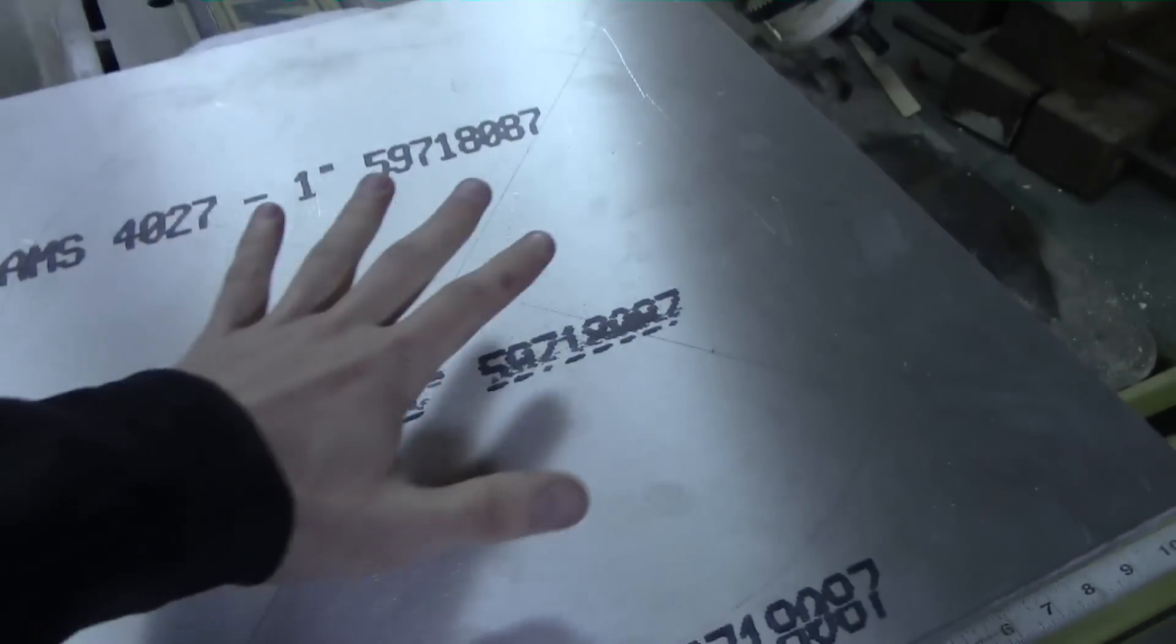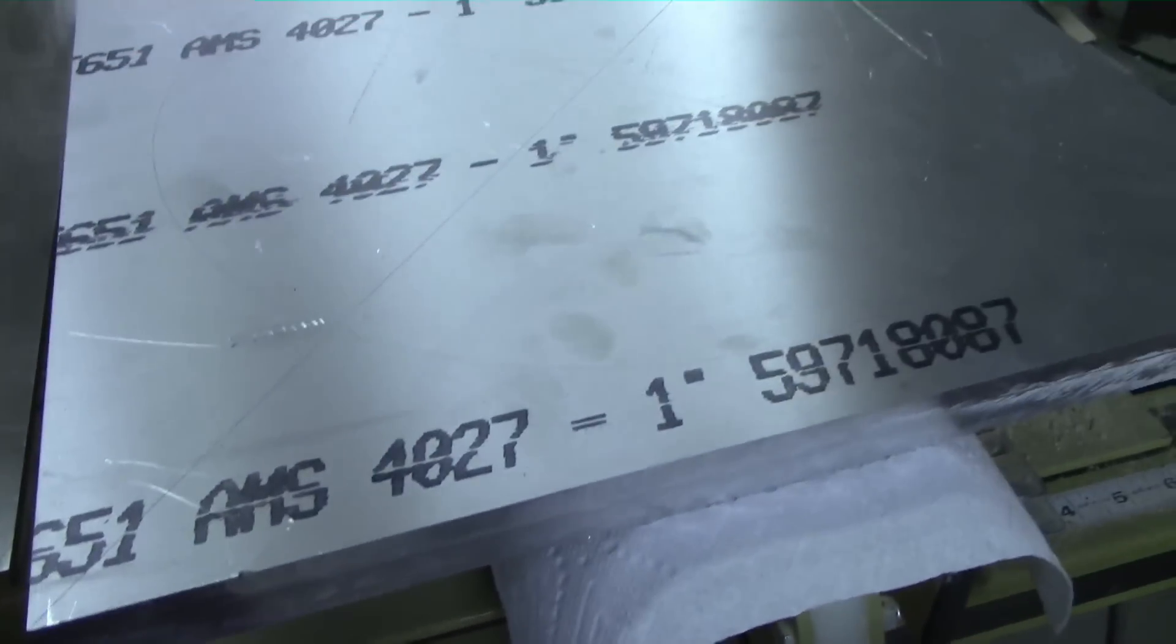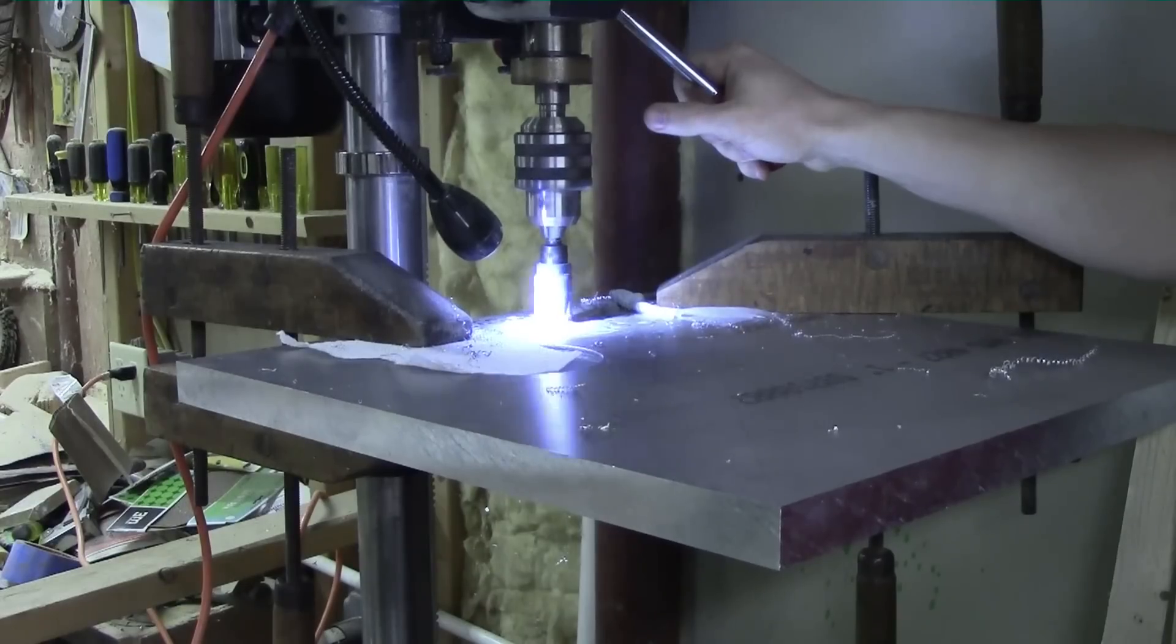I started by buying a massive chunk of aluminum, 18 by 18 by 1 inch thick. Then I started drilling a bunch of holes in it. A 4 inch one for the diffusion pump and a 1 inch one for a gauge.